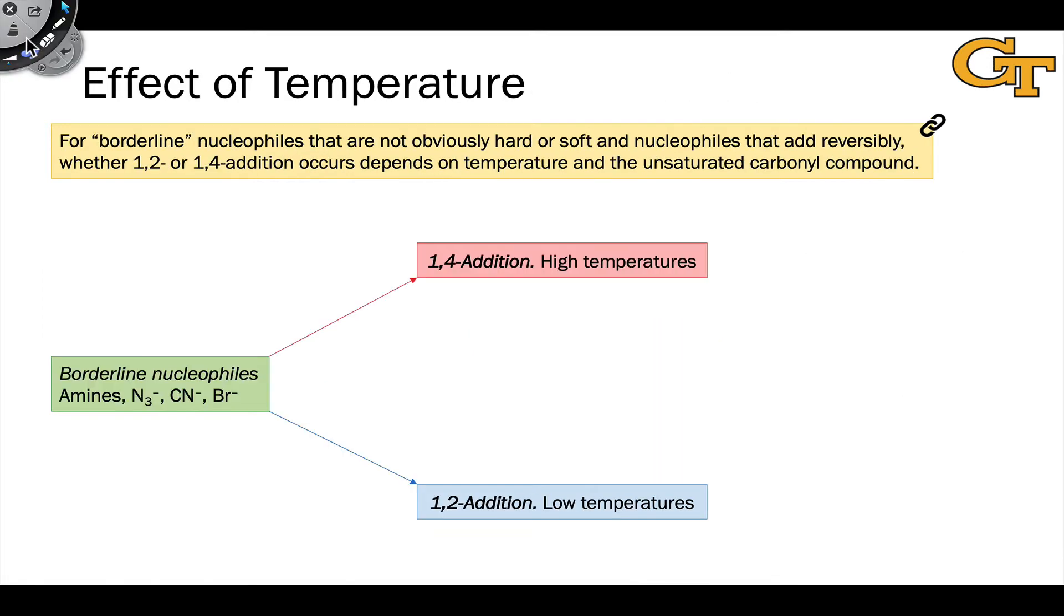There are some nucleophiles that are on the borderline between hard and soft, and the outcome for these depends on the remaining two factors, temperature and the nature of the electrophile. To understand the temperature effect, let's zero in on one of these borderline nucleophiles, cyanide, and try to understand what happens when cyanide is mixed with an alpha-beta unsaturated ketone. At low temperatures, the first thing we observe is 1,2 or direct addition of cyanide to the carbonyl carbon,